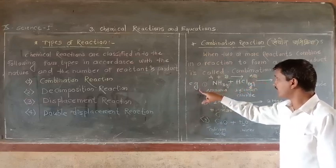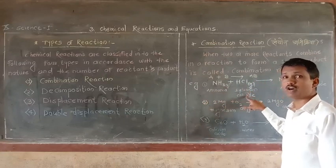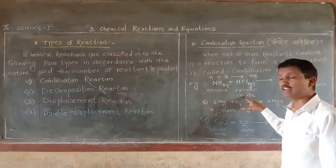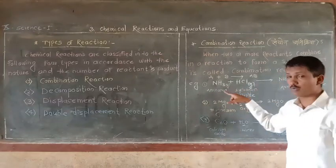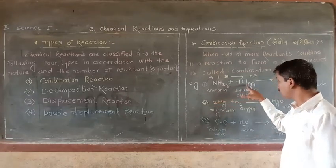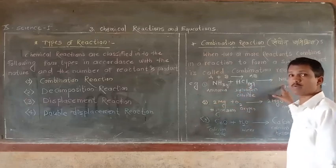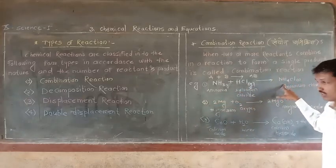Another example: when ammonia reacts with hydrogen chloride or hydrochloric acid, then we get ammonium chloride. In this reaction, there are two reactants and only one single product is formed. So it is also a combination reaction.